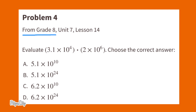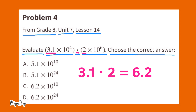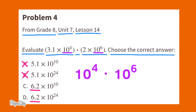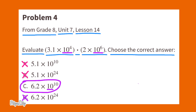Number 4, from 8th grade, Unit 7, Lesson 14: Evaluate 3.1 times 10 to the 4th times 2 times 10 to the 6th. Choose the correct answer. 3.1 times 2 equals 6.2, so that eliminates A and B. 10 to the 4th times 10 to the 6th equals 10 to the 10th, which eliminates D. The correct answer is C: 6.2 times 10 to the 10th.